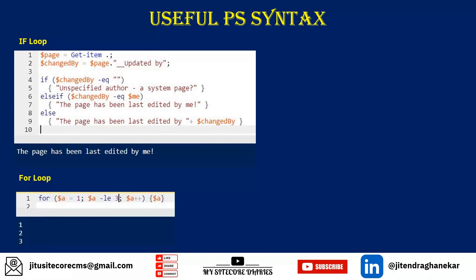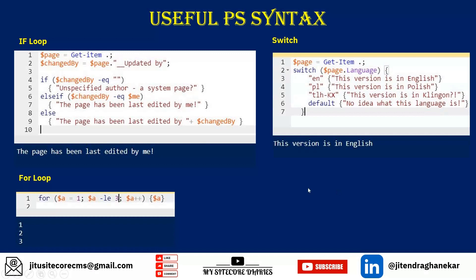For loop — it's exactly similar to what we have in C#. You define a variable using the dollar sign, for example $a. You can use a dollar sign to define any variable. Then you initiate it with one, then a semicolon, then your condition — $a -le 3 — then $a++ to increment, similar to C#. Printing $a will give you one, two, three.